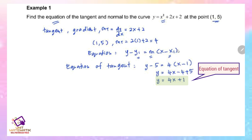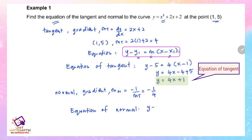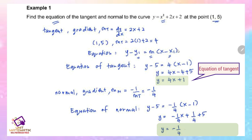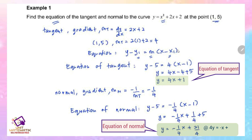For the normal, the gradient mn = -1/mt = -1/4. Using the same point (1, 5): y - 5 = (-1/4)(x - 1). Simplifying gives y = -x/4 + 21/4. Multiplying all terms by 4 gives 4y = -x + 21.